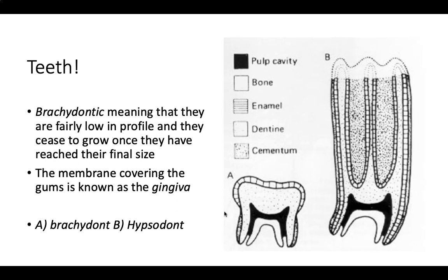Looking at teeth: we have brachydont and hypsodont types. Brachydont teeth are low in profile — not very long — and cease to grow once they've reached their final size. The membrane covering the gums is called the gingiva. Hypsodont teeth are quite long. Examples of hypsodont animals include horses, which have continuously growing molars, and guinea pigs and rabbits, which have hypsodont incisors that need frequent trimming.